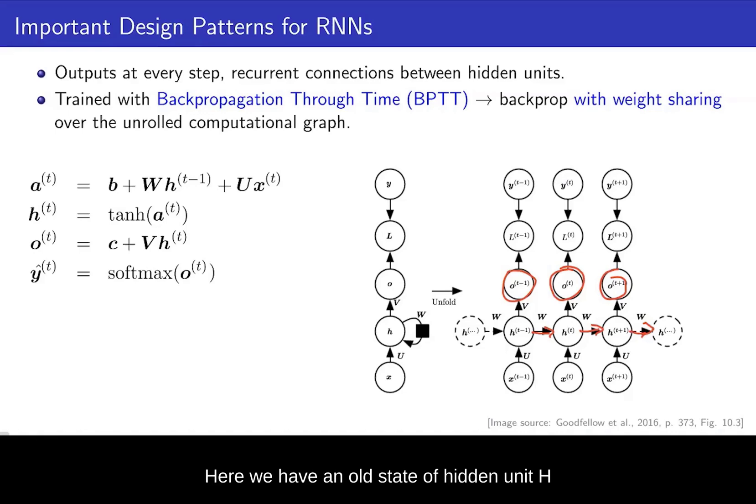Here we have an old state of hidden unit H that is multiplied now by the recurrence weights W, and we have our input X which is given at time step T. This is multiplied by the input weights U. We denote the resulting quantity as A in time step T. This resulting A is then passed through a non-linearity such as a tanh activation function to then yield our hidden state H of T.